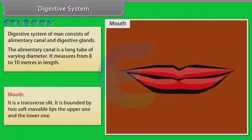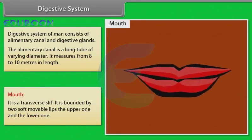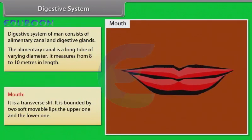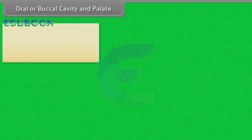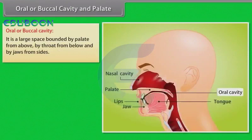The mouth is a transverse slit bounded by two soft movable lips — the upper one and the lower one. The oral or buccal cavity is a large space bounded by the palate from above, by the throat from below, and by the jaws from the sides.